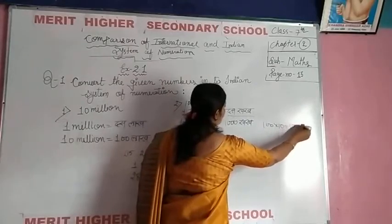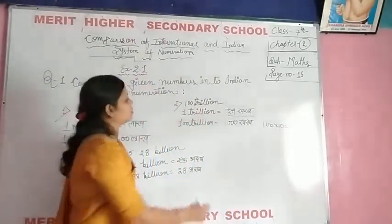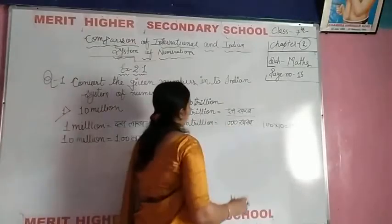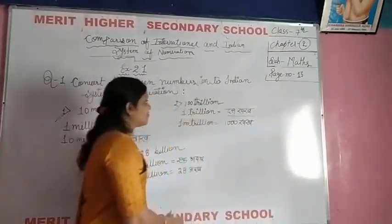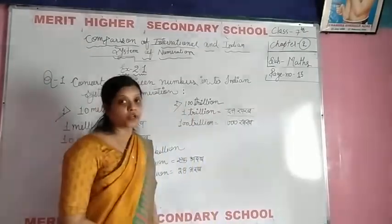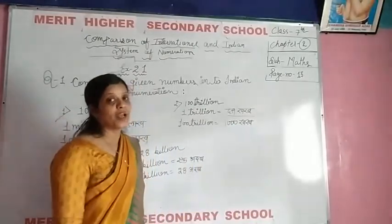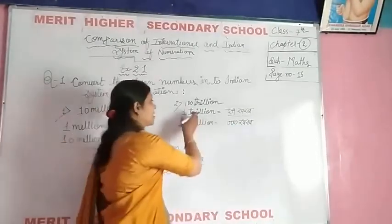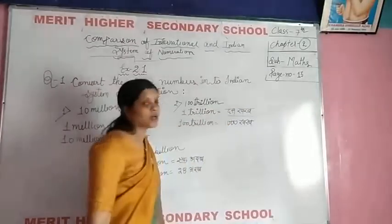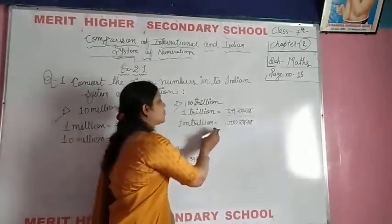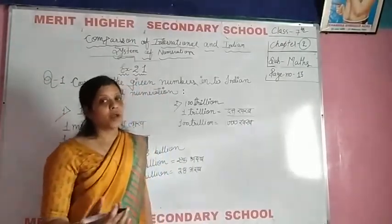Now, I have told you that you are not going to get 100 trillion only — you may also be asked about 50 trillion. If asked about 50 trillion, first find 1 trillion. 1 trillion equals 10 crore. So 50 trillion equals 50 multiplied by 10 crore. This is the method I have explained.